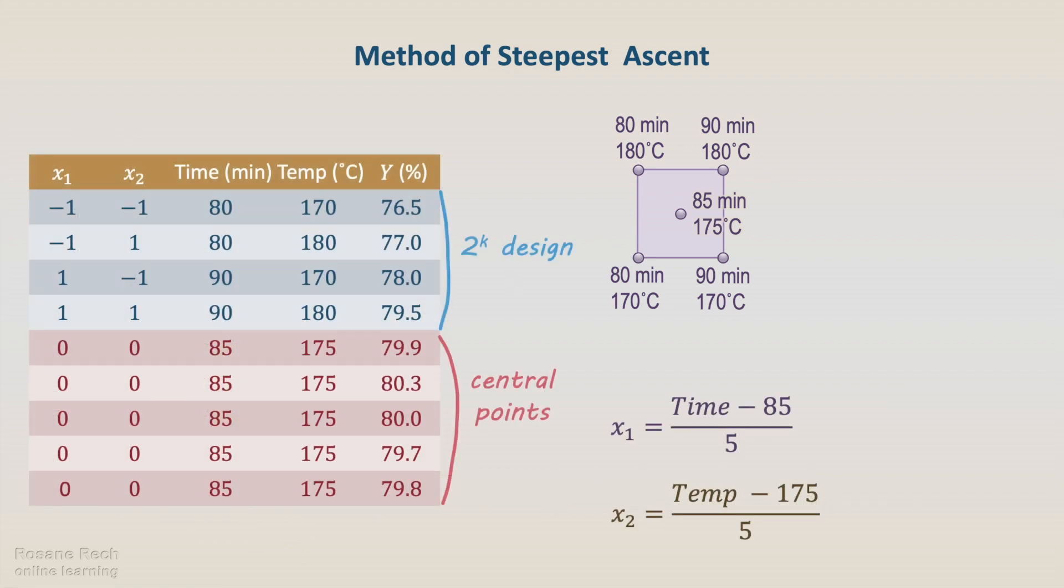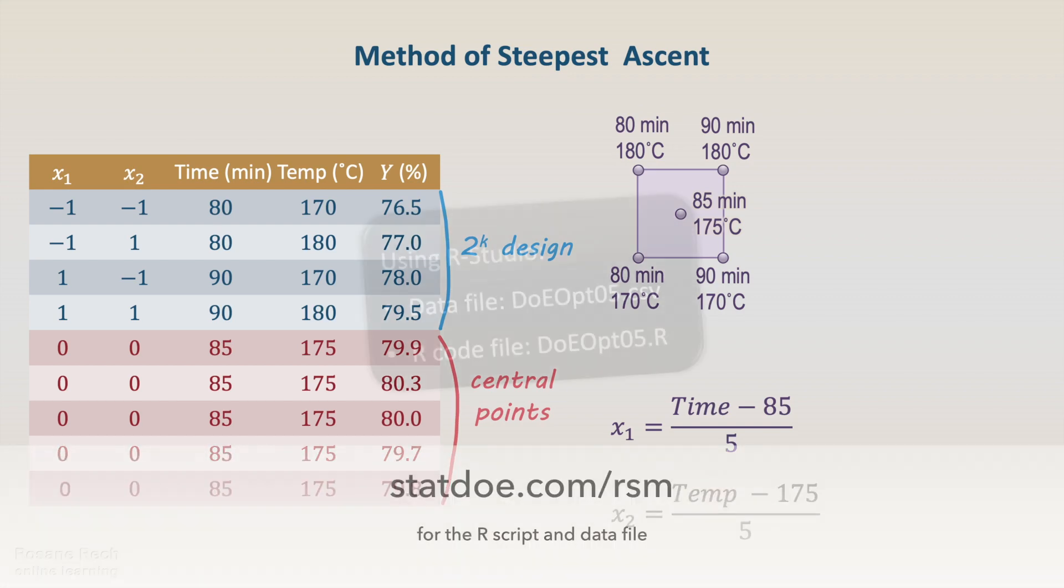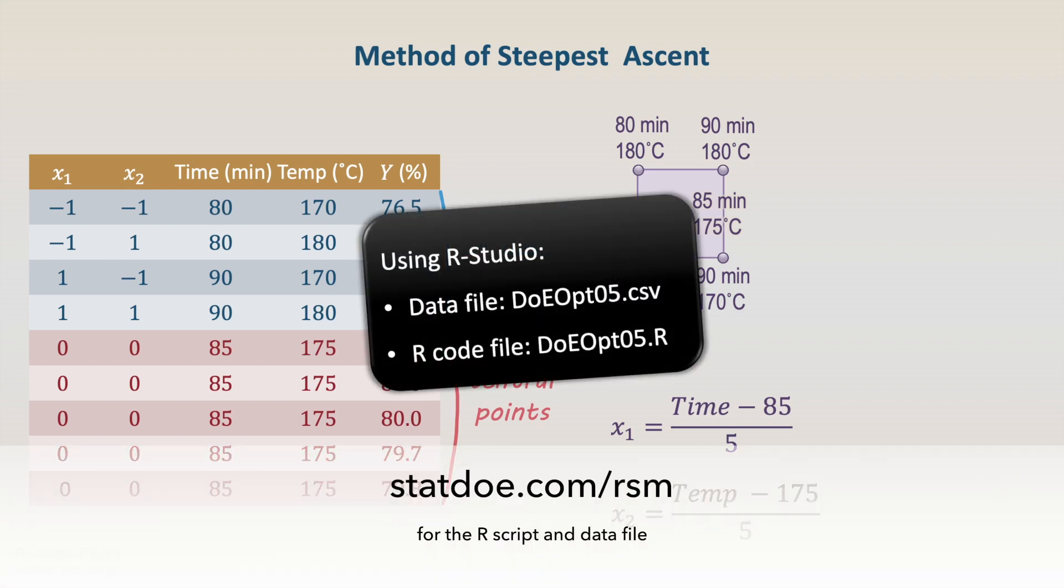The design must run as a single replicate in the factorial points and with five replicates at the central point. The relationship between the coded and the natural variables are given in the slide. Let's analyze the data together. Please download the R code and the data files and let's jump to R.